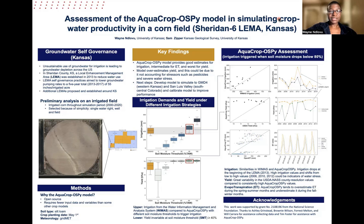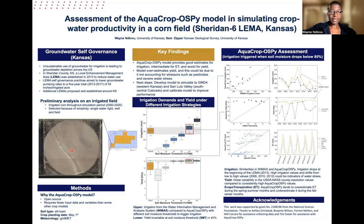Farmers are mainly interested in knowing how this LEMA is going to perform under different weather conditions, whether their crop yield is going to be affected, and how much water they need to irrigate. For our preliminary analysis we used an irrigated cornfield, selecting this well because of its simplicity — it has one well related to a single water right.